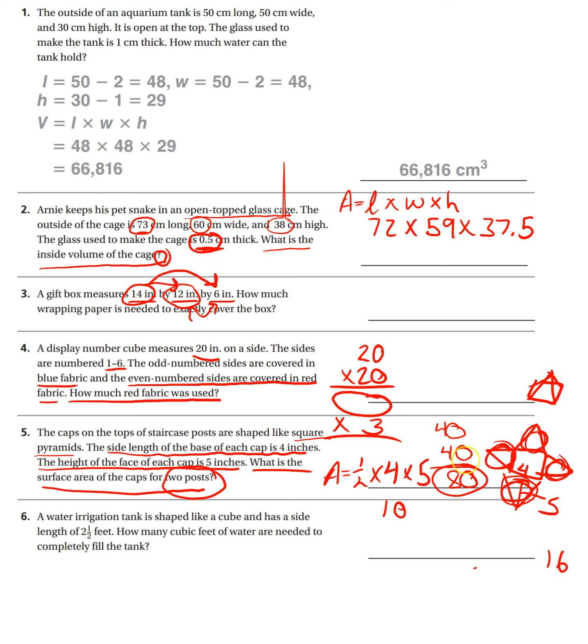40 for the one post. And then there's two posts. So another 40. And then, yeah, it looks like they are including the bottom. 16 and 16, which would be 32. So 112. Yeah, that's what they did. They did include the bottom.